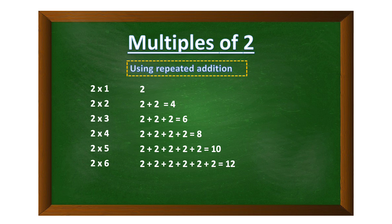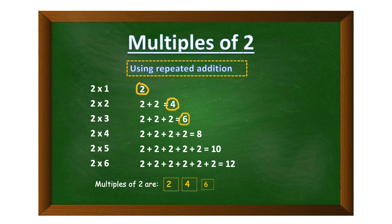Two added three times gives six, two added four times gives eight, two added five times gives ten, two added six times gives twelve. Skip counting gives us the same result — multiples of two are two, four, six, eight, ten, twelve, and so on.